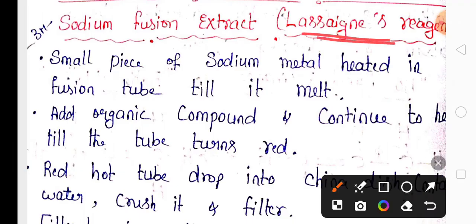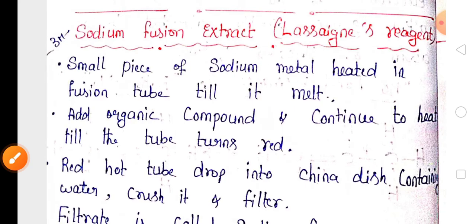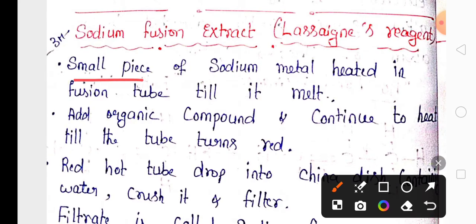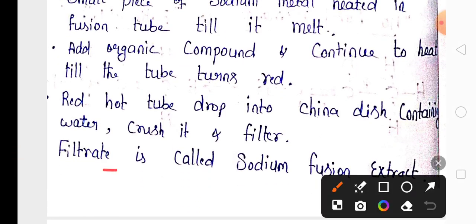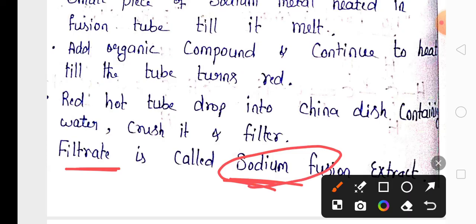The preparation of sodium fusion extract (Lassaigne's reagent) is important for two or three marks. Take a small piece of sodium, heat until it melts, add the organic compound, and continue heating until the tube becomes red hot. Drop the red-hot tube into a china dish containing water, crush, and filter. The filtrate is called the sodium fusion extract, used to detect nitrogen, sulfur, phosphorus, and halogens.